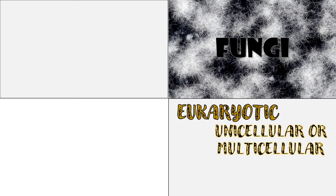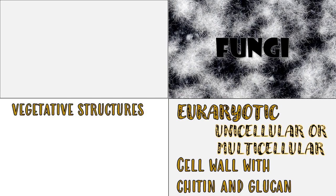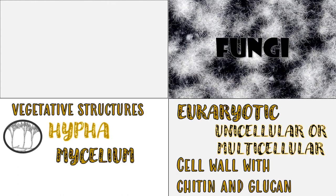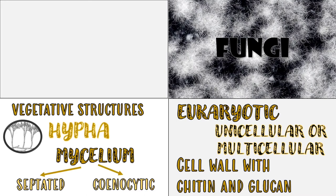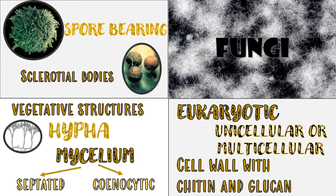Fungi are eukaryotic organisms because they possess true nuclei and typical cellular organelles. They are either unicellular or multicellular, with cell walls made up of chitin and glucan. They have vegetative structures composed of branched filamentous threads called hyphae, and a mass of hyphae is called mycelium or mycelia. Mycelium may have cross walls or septa (septated) or no cross walls (coenocytic). Most fungi are spore-bearing, but some produce sclerotial bodies, which are hardened masses of mycelia.